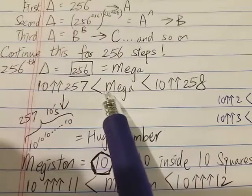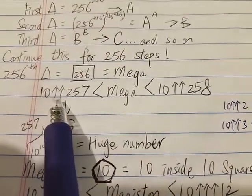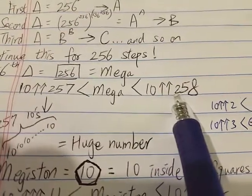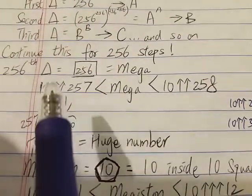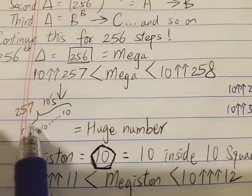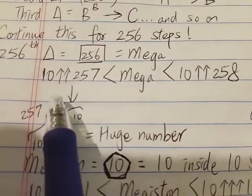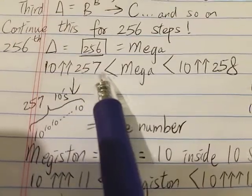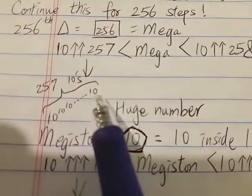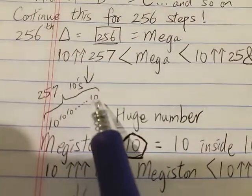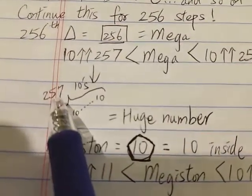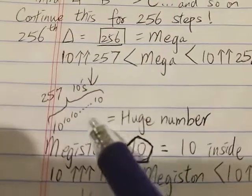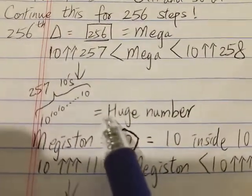Mega is between 10 two-arrow 257 and 10 two-arrow 258. Two-arrow notation means a power tower of 10s. So 10 two-arrow 257 is a power tower with 257 tens — meaning this power tower contains 257 levels, which is a huge number.